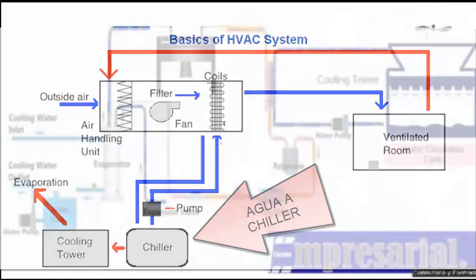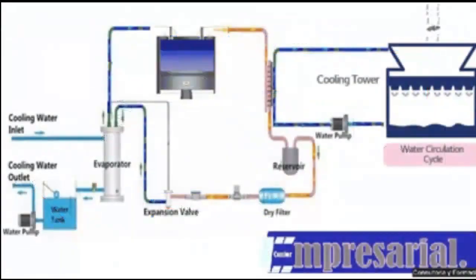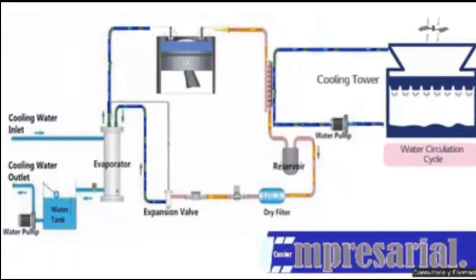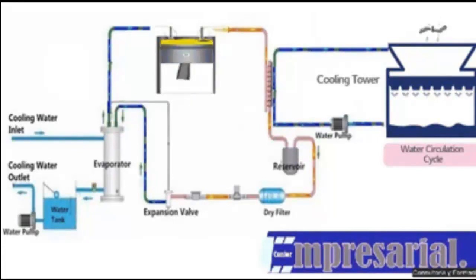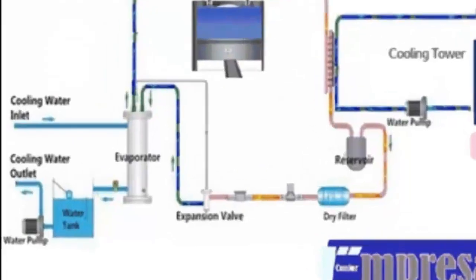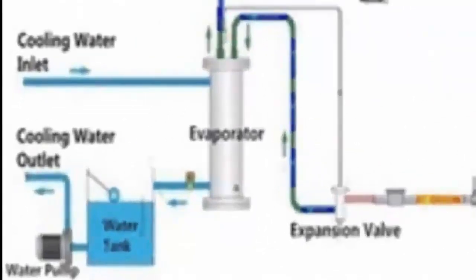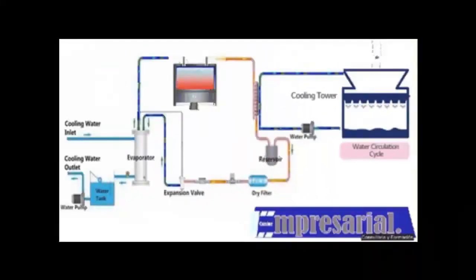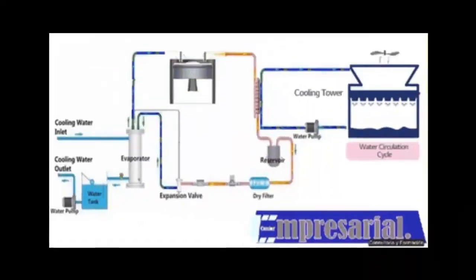Question 13: What happens to the ice water again when it comes out of the chiller? A. When the water comes out of the chiller, it will have given up the heat gained in the air-handling unit. B. The ice water will return to 7 degrees Celsius (44°F).